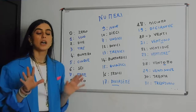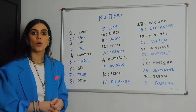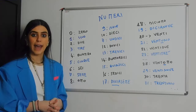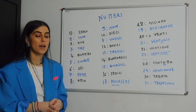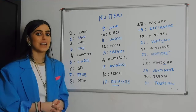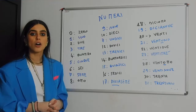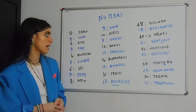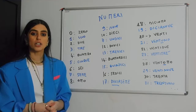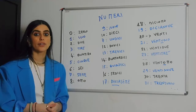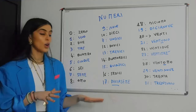Let's repeat up until ten one more time: zero, uno, due, tre, quattro, cinque, sei, sette, otto, nove, dieci. Now we go from 11 to 20: undici, dodici, tredici, quattordici, quindici, sedici.